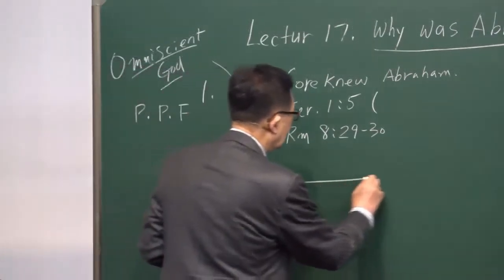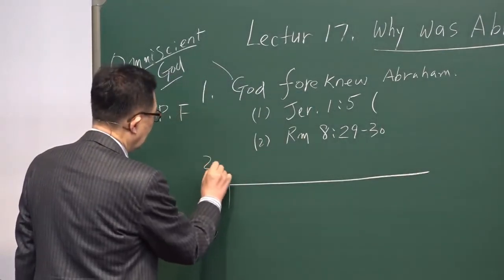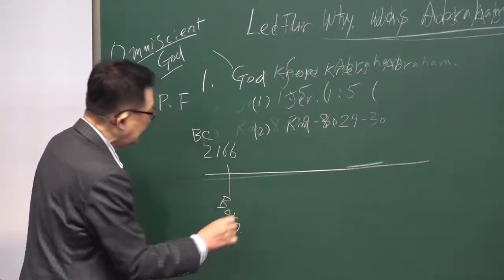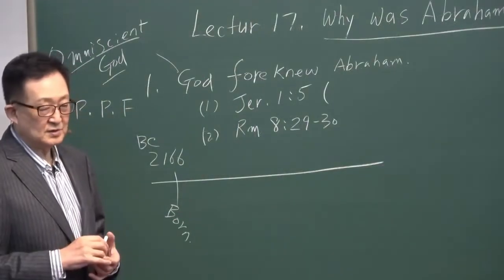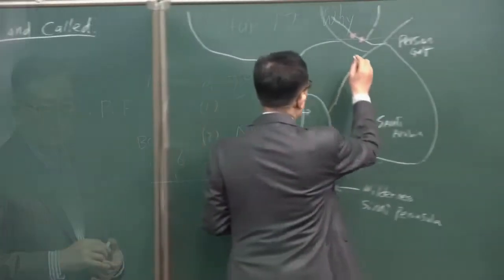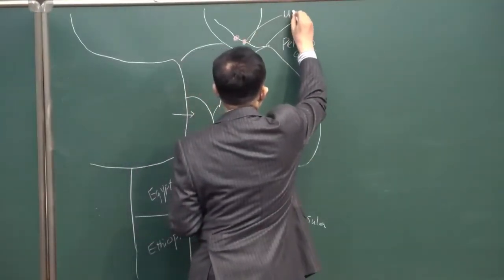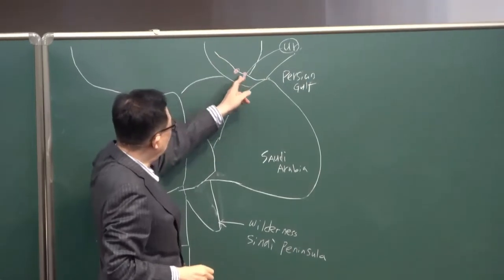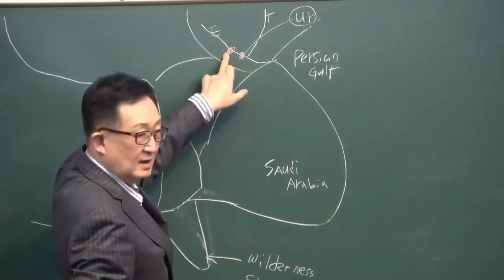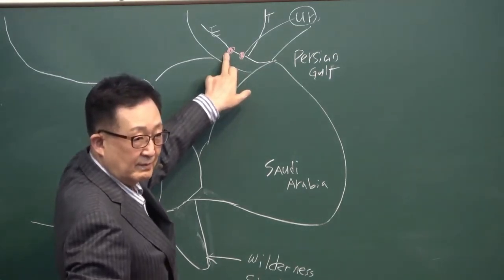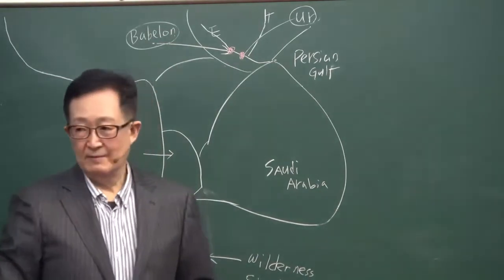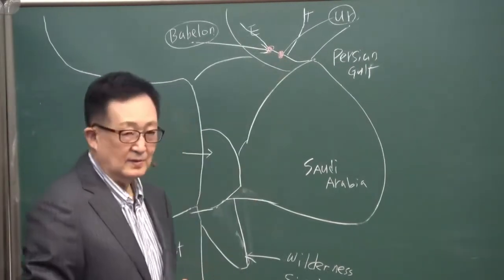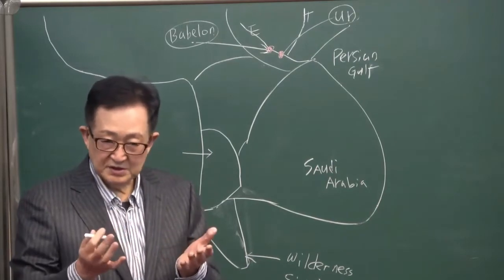When was he called? Abraham was foreknown, and he was born in BC 2166. We just assumed that he was called when he was about 60 years old. Over here, this is Ur, Ur of the Chaldeans. He was called when he was about 60 years old.